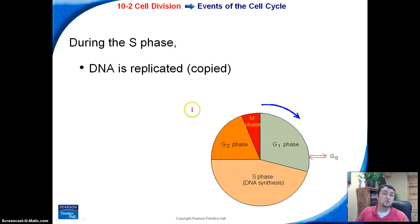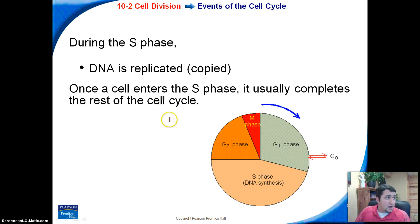During the S phase, we are going to replicate our DNA. So we're going to make a copy of all of the DNA in every single cell. And an important thing to know actually is that once the cell starts S phase, once it actually copies its DNA, it's going to complete the rest of the cycle. So once we get into S phase, it's actually going to finish the rest.